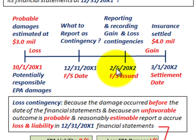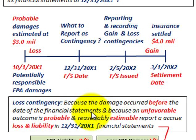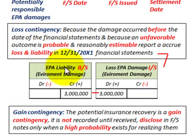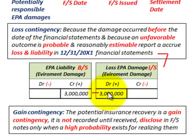Our reporting for these financial statements didn't happen until February 5th of 20X2. For the loss contingency: because the damage occurred before the financial statement date, an unfavorable outcome is probable, and it's reasonably estimated, you would report an accrued loss and liability on 12-31-20X1. You set up a liability account for environmental damages on your balance sheet — credit it for $3 million — and recognize a loss on the income statement, debiting that for $3 million.